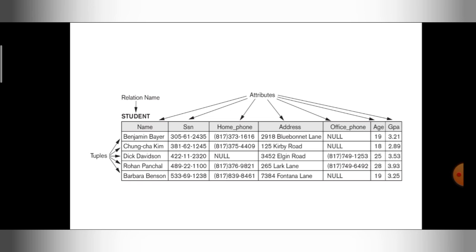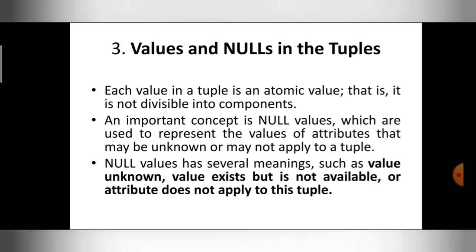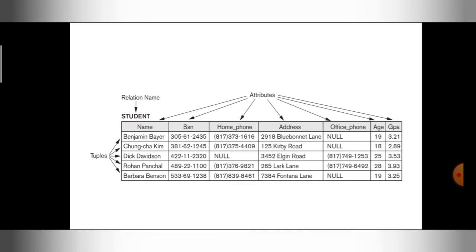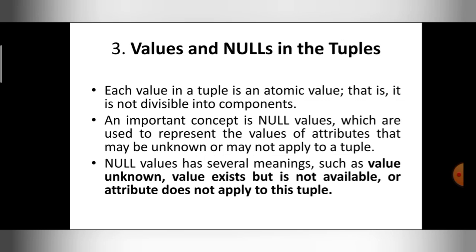The next characteristic is values and nulls in the tuples. Each value in a tuple is an atomic value — that is, it is not divisible into components. I can't divide SSN further, I can't divide name further. So whatever values are present in this relation are atomic, meaning the values are not divisible.